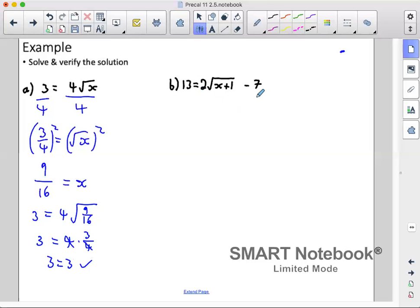Okay, this one has a few more steps to rearrange but same principle. So add 7 to both sides. So I've got 20 is equal to 2 root of x plus 1. Divide both sides by 2. So I've got 10 is equal to root of x plus 1.